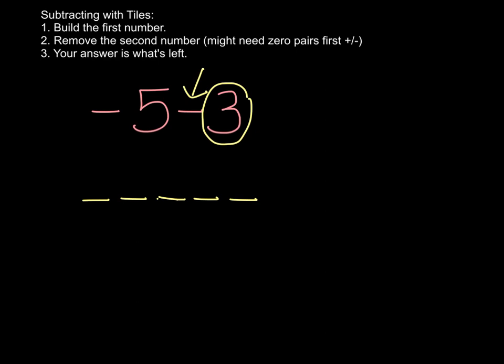I'm thinking to myself, how many 0 pairs should I add? Well, I need to take away 3 positives, so why don't we make sure to add 3 0 pairs? So I added a negative and a positive together, a negative and a positive, a negative and a positive. In doing that, you didn't change that starting value. We still have negative 5, but we put a couple 0s on so we can have some tiles to pull away from.